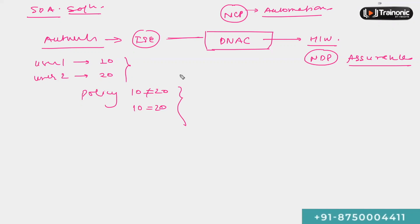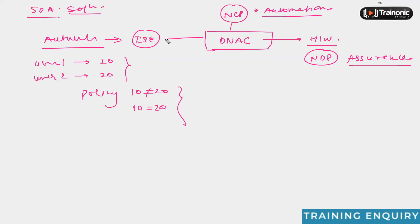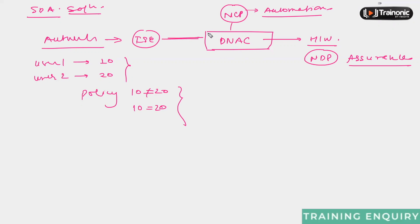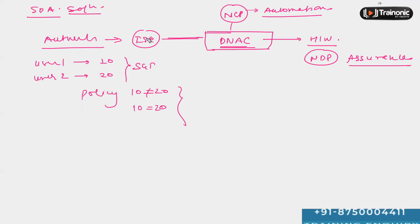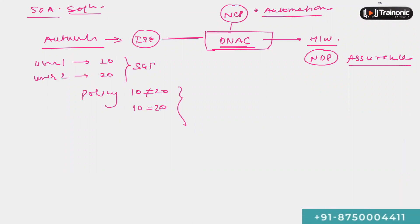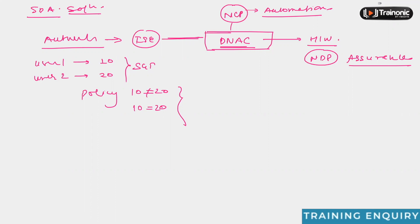Even though ISE can be integrated with DNA Center, it is DNA Center that is going to manage the policies and everything. We create the policies and define security group tags from the DNA Center itself. ISE is connected to DNA Center, and they communicate with each other. Authentication, tagging, and policies are all ensured through this interaction.